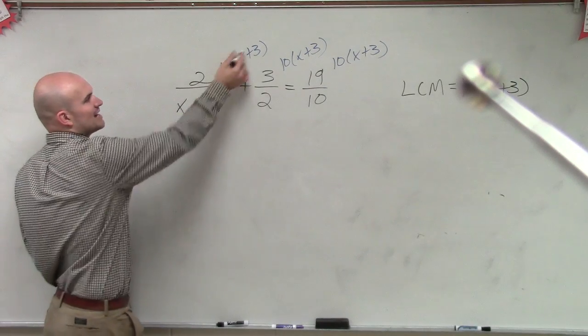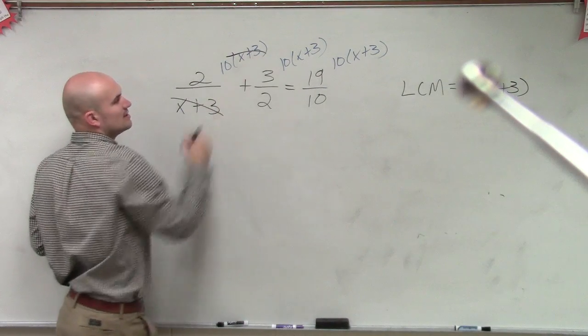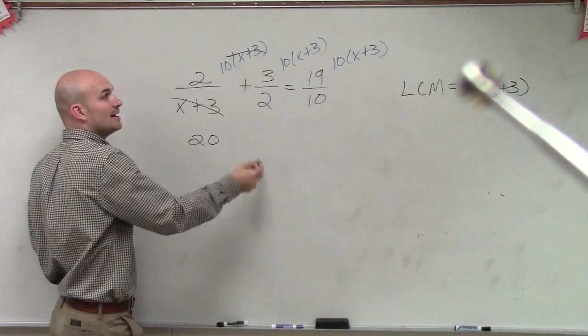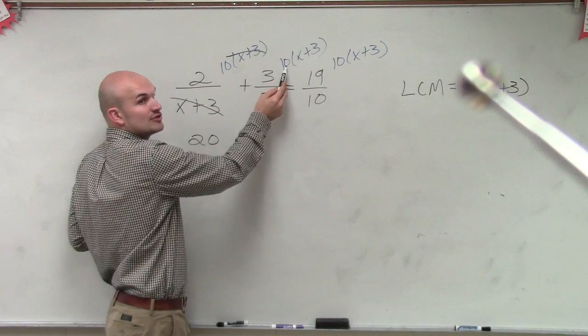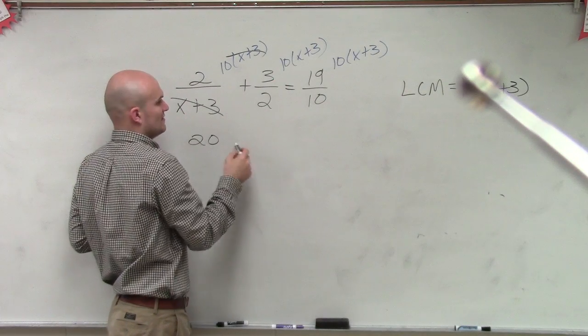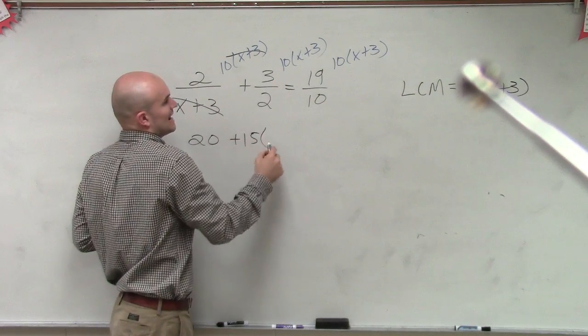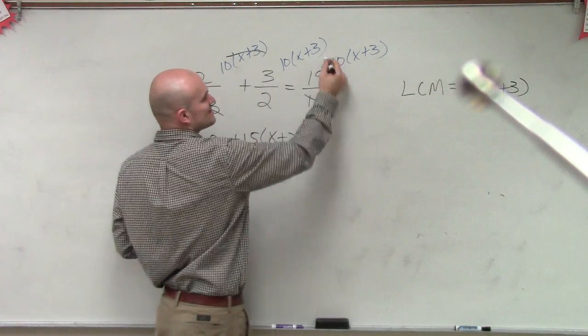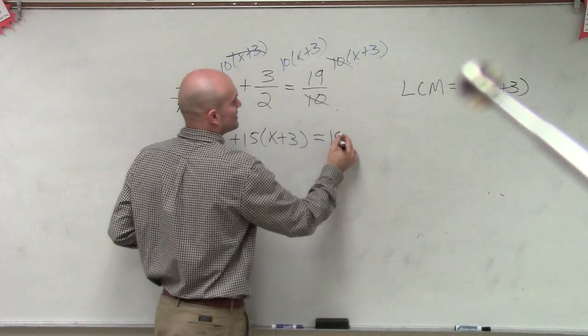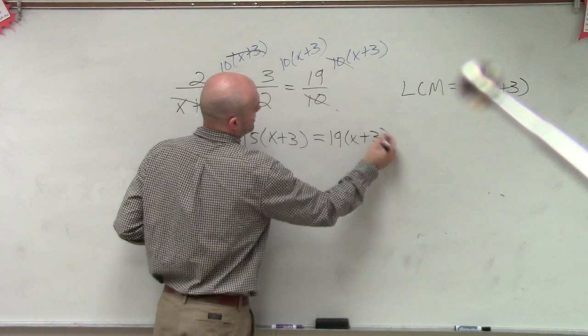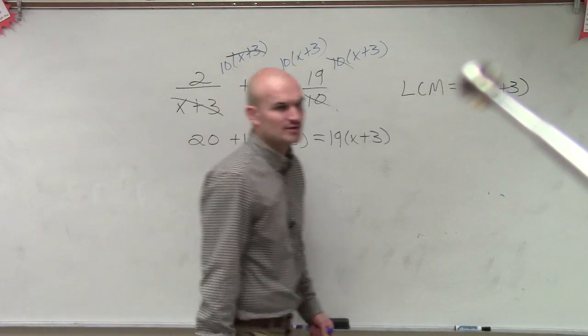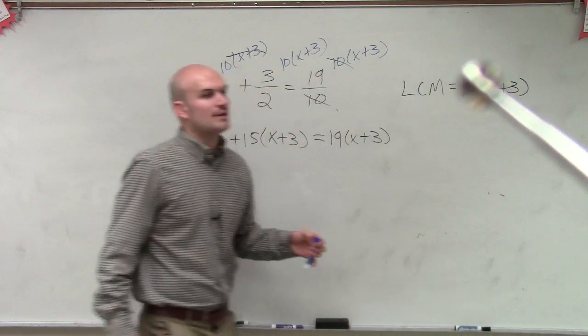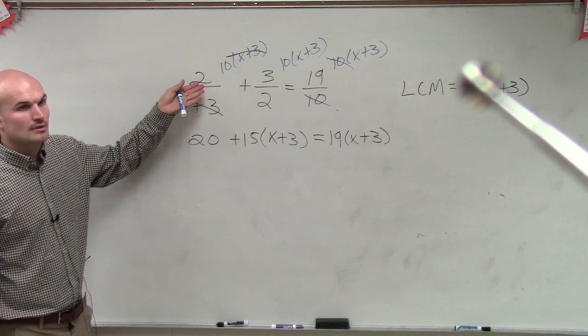Well here, my x plus 3's are going to divide into 1. So I'm just left with 2 times 10, which is 20. Here, 3 times 10 is 30, divided by 2 is 15, times x plus 3, equals here, my 10s divide to 1, and I'm left with 19 times x plus 3. Does everybody see exactly what I did for those steps? What's your question? Where did I lose you at?